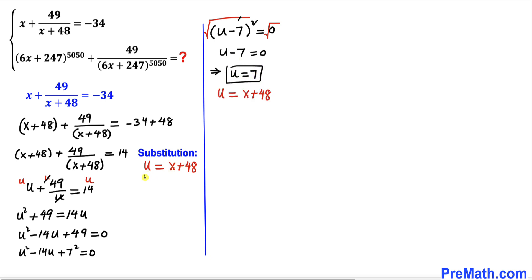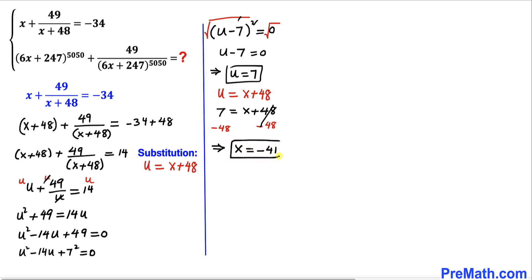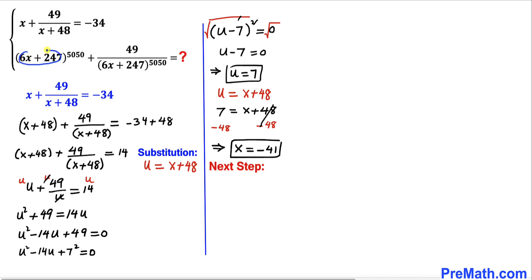Therefore u equals 7. Since u equals x plus 48, we substitute back: 7 equals x plus 48. Subtracting 48 from both sides gives x equals negative 41. Now we want to calculate the value of 6x plus 247 whole power 5050 plus 49 divided by 6x plus 247 power 5050.